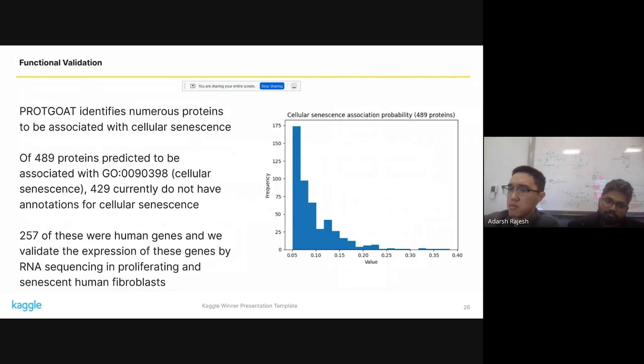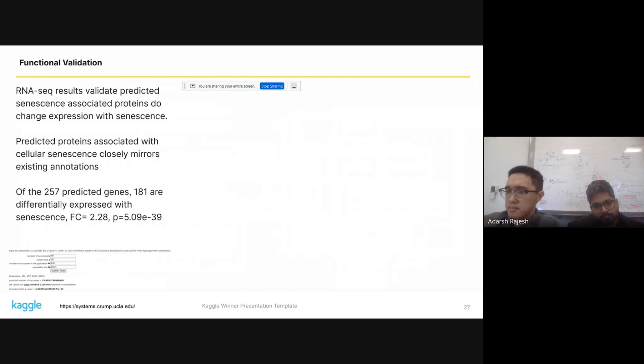So what we did is we took our model and we look at which of the labels that we predicted are associated with cellular senescence. And of these from the test set, we found 489 proteins to be predicted with the cellular senescence label. And out of these proteins, the vast majority of them, 429, do not have any annotations currently for cellular senescence. And of these 429, we found 257 of these were in our RNA-seq data. They are human genes that are expressed in our human fibroblast cell lines. And we wanted to take a closer look at what these genes look like from our data sets.